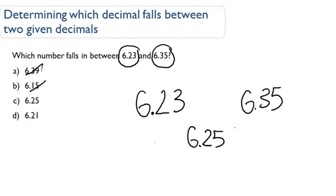All right, well, let's check it out. The number in the tenths place is less than the number in the tenths place for 6.35. So 6.25 is the right answer.